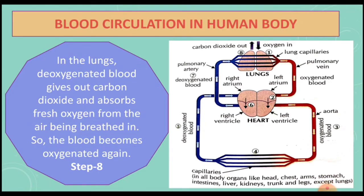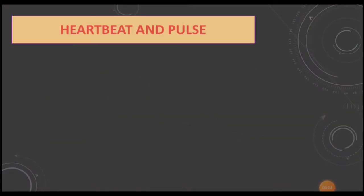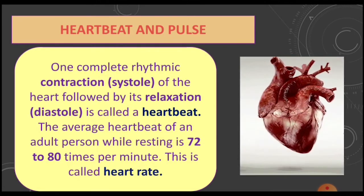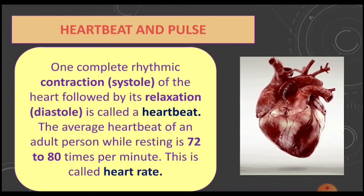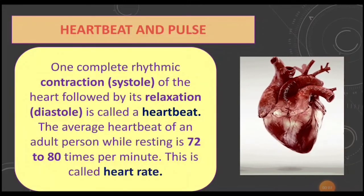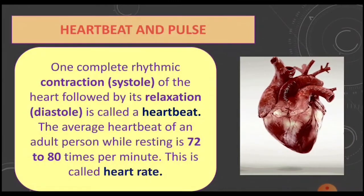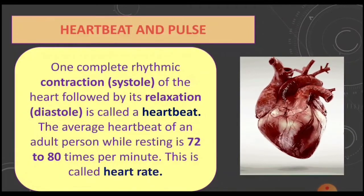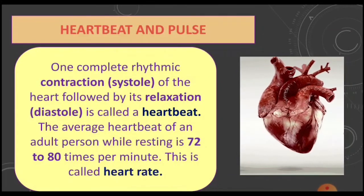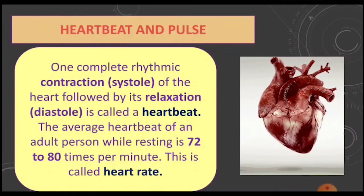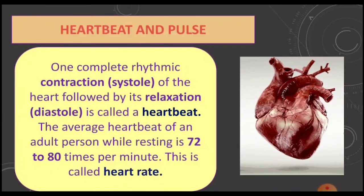Next is heartbeat and pulse. The walls of the chambers of the heart are made up of muscles which contract and relax rhythmically. One complete rhythmic contraction of the heart, called systole, followed by its relaxation, called diastole, is called a heartbeat. The average heartbeat of an adult person while resting is 72 to 80 times per minute, which is called the heart rate.